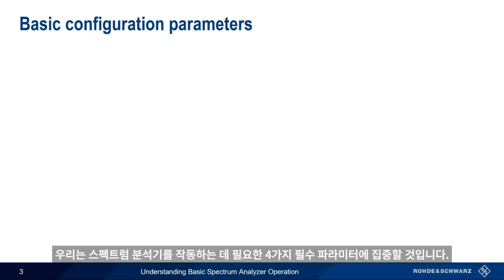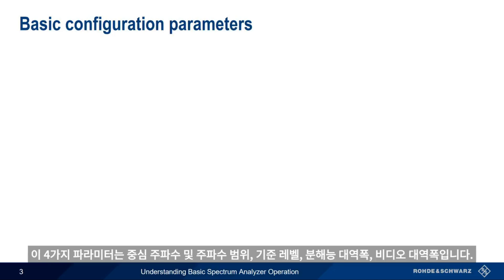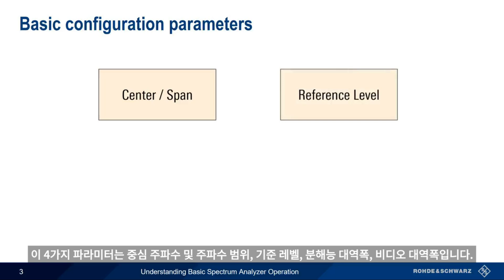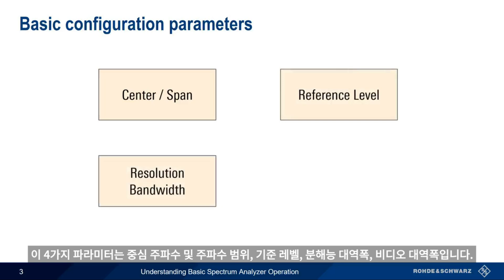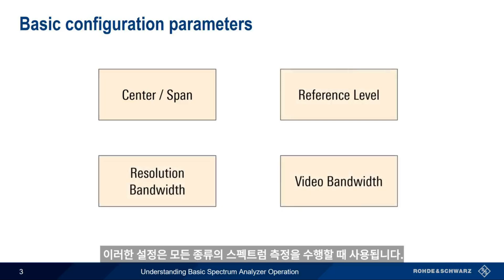We're going to concentrate on the four essential parameters needed to operate a spectrum analyzer. These four parameters are center and span, reference level, resolution bandwidth, and video bandwidth. These settings are used when making almost any kind of spectrum measurement.